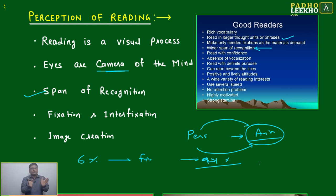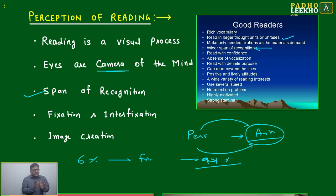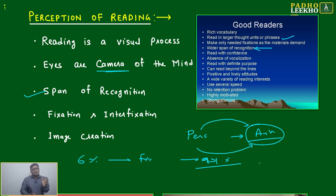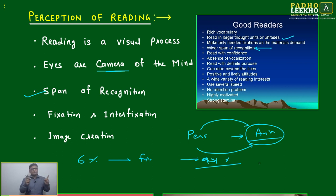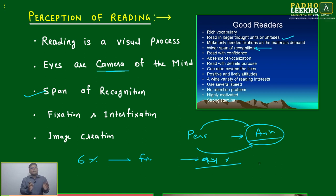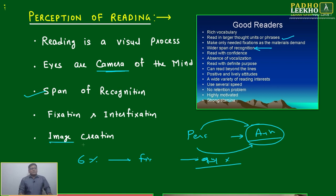To improve span of recognition, at one point in time you should not read just one word. This is just a habit — do it for 10 days and you will get habituated. Divide one line into two parts, reading five to six words together. Once you are habituated, you can practice vertical reading — one span per line. For CAT, if you can divide one line into two or three spans, that is sufficient.